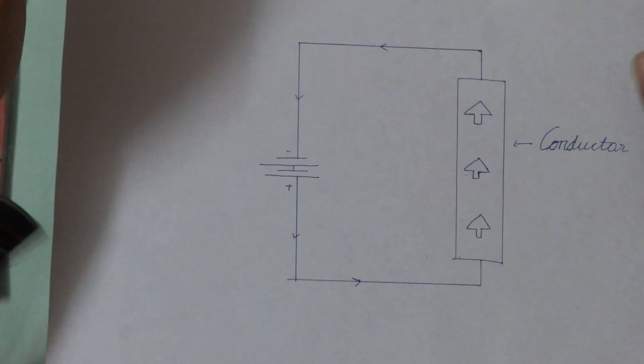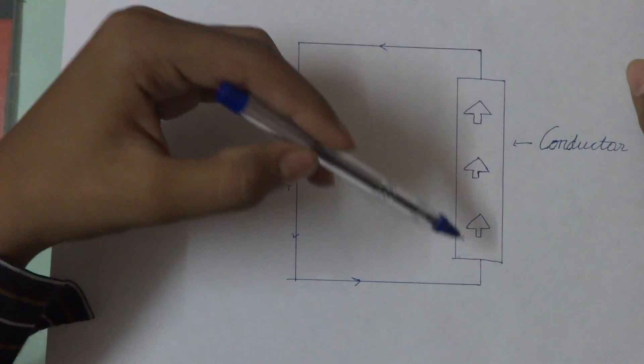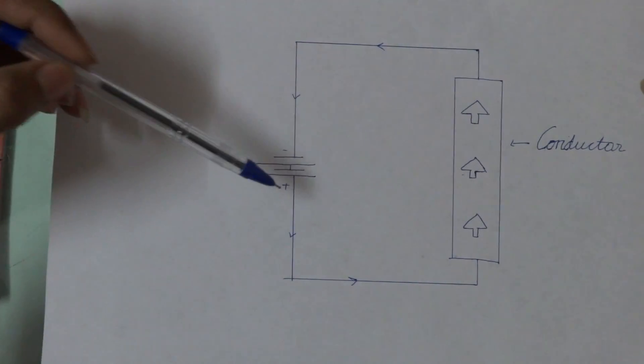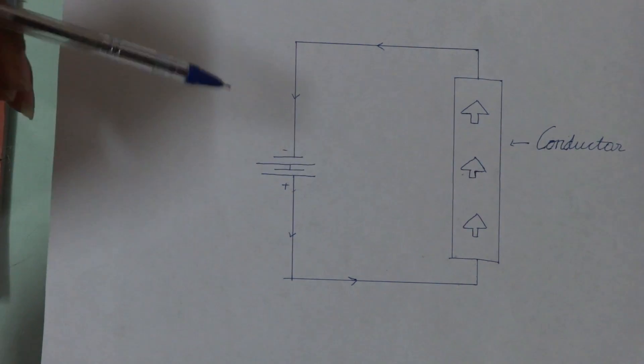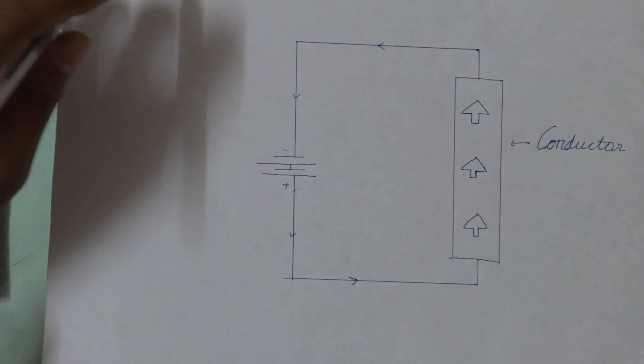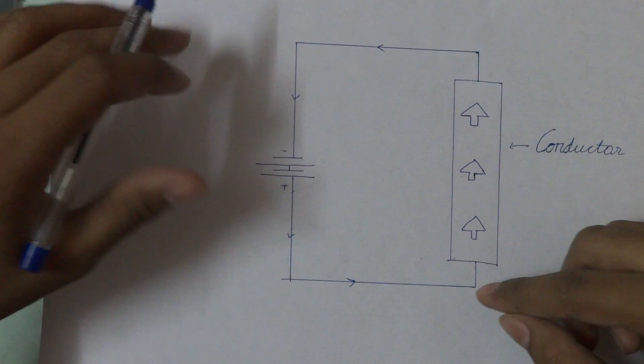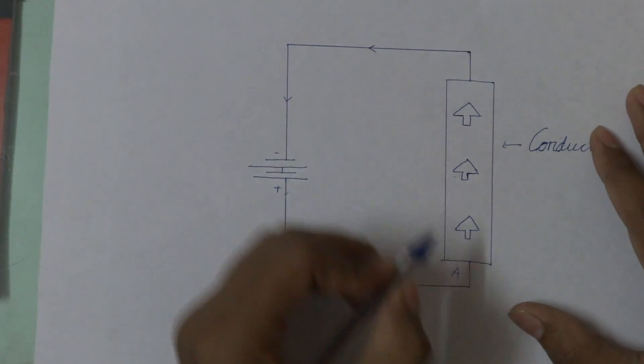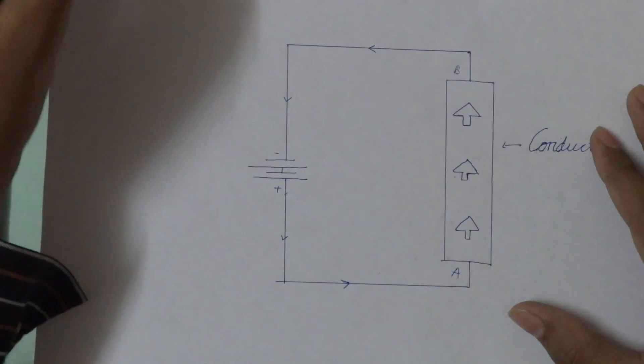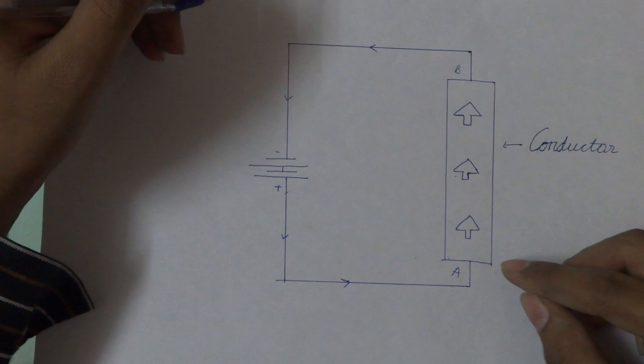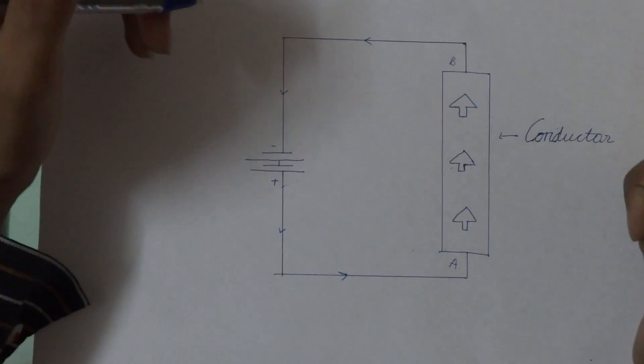Imagine this is a circuit. This is a conductor, this is a source of EMF or potential difference. Now current is flowing from point A to point B.